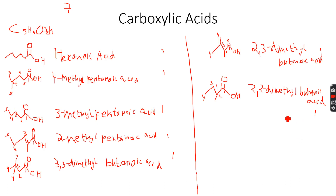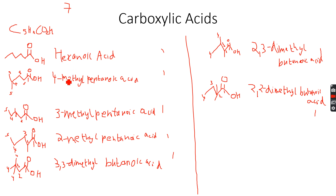So there are a total of seven structural isomers. Now let's look at the stereoisomers. For the first one, there is no carbon-carbon double bond and no chiral center, so zero stereoisomers. For the second one, again zero stereoisomers.